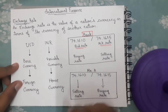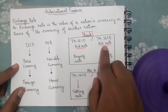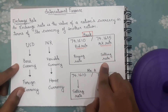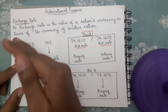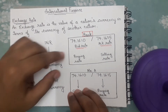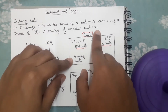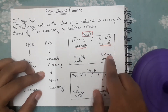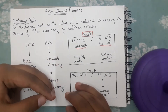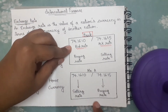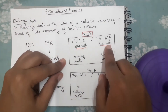The bid rate is also known as the buying rate and the ask rate as the selling rate, but from the bank's perspective. The bid rate is the buying rate for the bank, and the ask rate is the selling rate for the bank. When the bank is buying US dollars it buys at the bid rate, and when selling US dollars it sells at the ask rate.